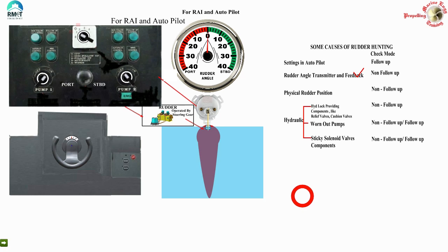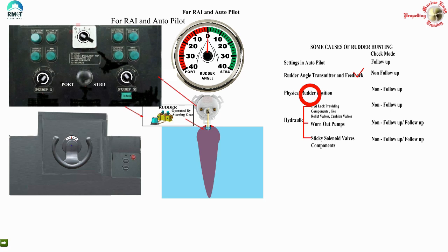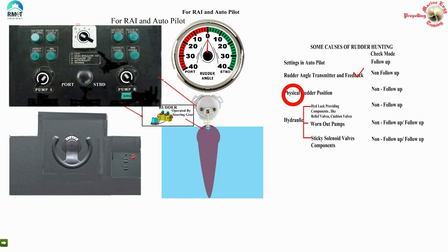Third cause: physical rudder position. We talked about the challenge in understanding what the physical rudder position is and how difficult it is to identify. From the steering flat, maximum you can see is the pointer that reads the rudder angle during emergency steering - but even that will show zero, because all these indicators relate to the rudder stock. What we are talking about is the rudder not being at zero when the rudder stock is at zero. This can happen with a keyless fitting - in a keyed fitting this might not happen, but with keyless there is quite a scope for this.